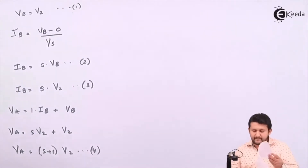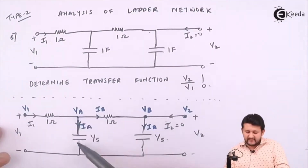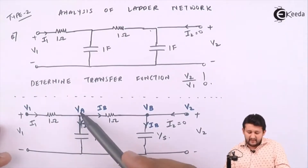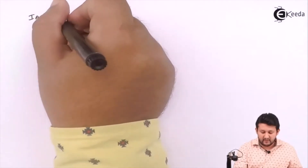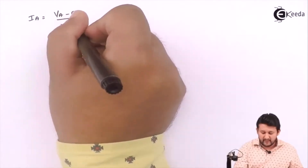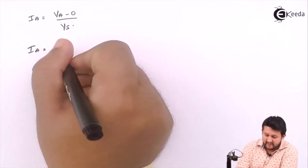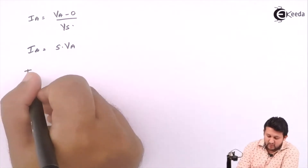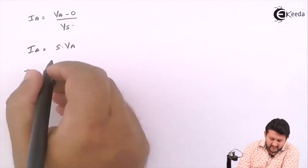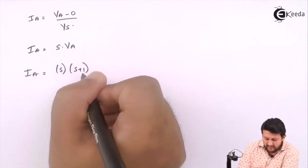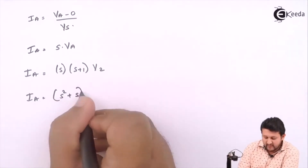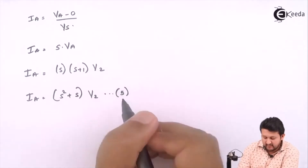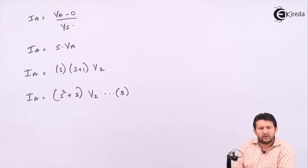Now let's go for vertical again. For the vertical path, Ia equals Va minus zero upon the impedance 1/S. Applying Ohm's law, Ia equals S times Va. I already have the value for Va, which is (S plus 1) times V2. Substituting, Ia equals S times (S plus 1) times V2, which gives Ia equals (S squared plus S) times V2. That's the value of Ia obtained by solving the vertical path.